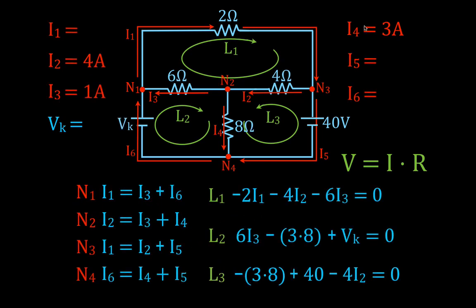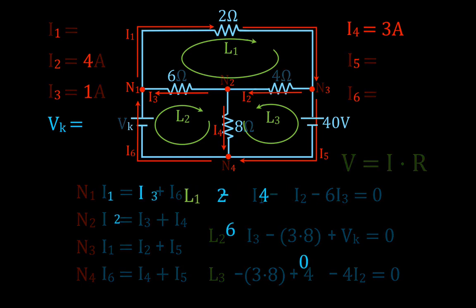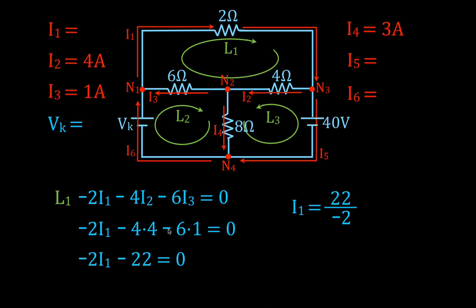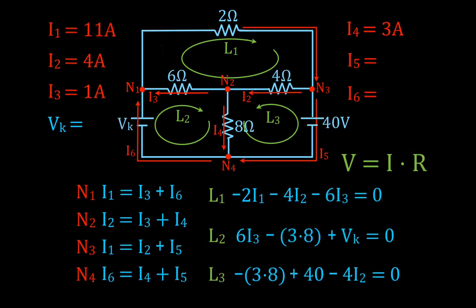Now we know I2, I3, and I4. We'll solve for I1 next using the loop-one equation. Substituting: minus 2I1 minus 4 times 4 minus 6 times 1 equals zero. Moving terms over, we get I1 equals 22 divided by minus 2, so the current is minus 11. That doesn't mean the current is negative — it means we chose the wrong direction for I1. So I'm going to take those arrows out and place them in the correct counterclockwise direction.